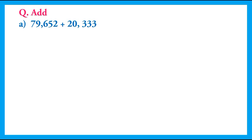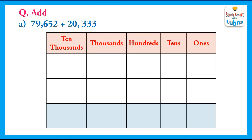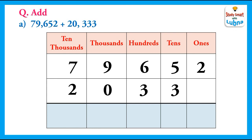Now we have to add 79,652 and 20,333. What is the first step? Yes, we will write the five-digit numbers below their place values: 79,652 and 20,333. Now we will start adding them.